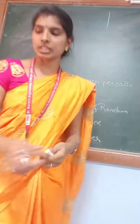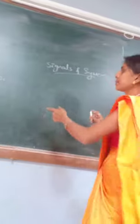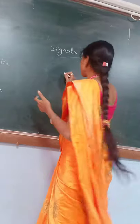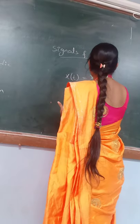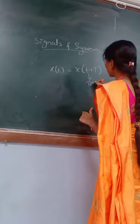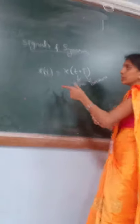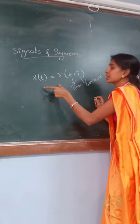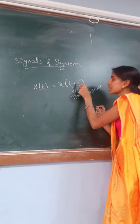Coming to the periodic and non-periodic signal — the signal is said to be periodic means the signal will repeat at every time interval of instant time T. The periodic signal satisfies the condition, in mathematical form: X(T) equals X(T + capital T), where T is the time and capital T is the constant.